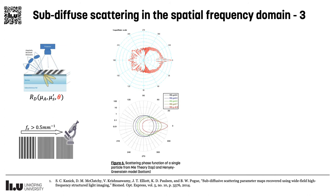From Mie theory, we can see that the phase function of a photon scattered by a single particle is quite complex. Normally, we only use a simple first-order approximation, like the Henyey-Greenstein phase function, and this is an acceptable approximation when we are dealing with millions of scattered photons. However, more details could be extracted by using more complex, higher-order models, which can better describe the propagation of sub-diffuse scattered photons.